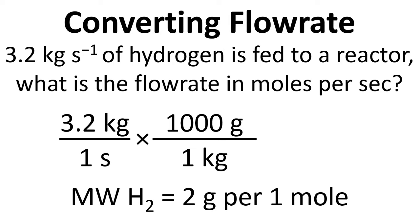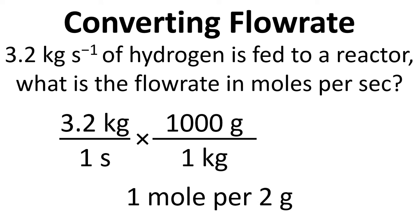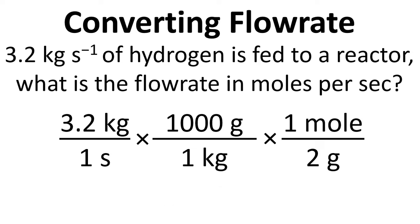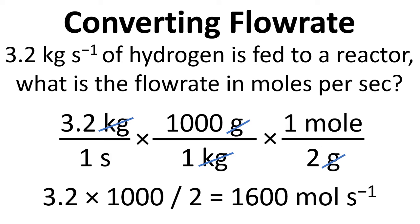We know the molecular weight of hydrogen is 2 grams per mole, or 1 mole per 2 grams, so we do 1 mole divided by 2 grams. We cancel down the units and calculate what we've got left and we end up with 1600 moles per second.